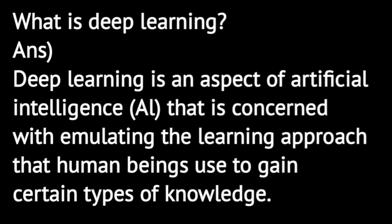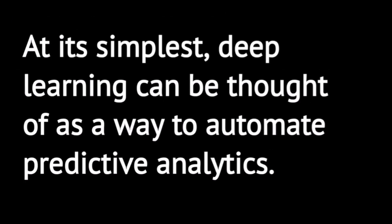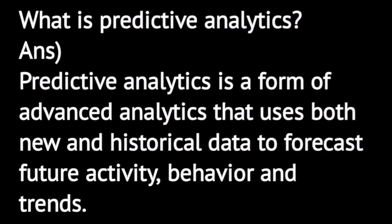What is deep learning? Deep learning is an aspect of artificial intelligence that is concerned with emulating the learning approach that human beings use to gain certain types of knowledge. In its simplest form, deep learning can be thought of as a way to automate predictive analytics.